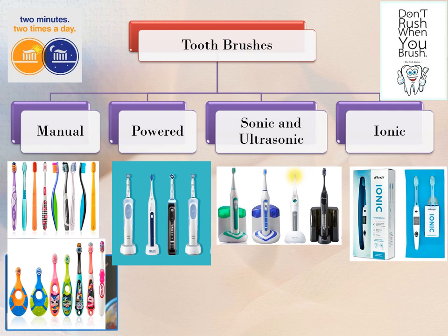Today the market is infiltrated with myriad toothbrushes, each claiming its own superiority. We can see the range from manual, powered, sonic, ultrasonic, and ionic toothbrushes. However, research does not show any significant differences between these brushes in gingivitis score or bleeding indices, which are the more important measures of improved gingival health.